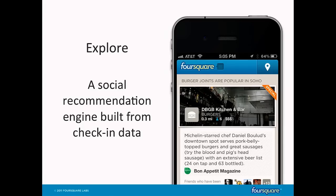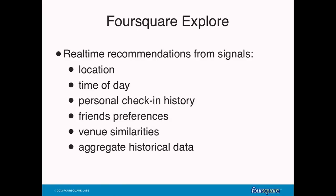This brings me to Explore — our tool for exploring a city. We think it's a powerful tool for making cities easier to use. Explore is a social recommendation engine built from all this aggregate check-in data. We want people to be able to pull out Explore anywhere in the world and get a great recommendation for whatever they're looking for — burgers, drinks, pizza — curated by their social network and highly personalized to their tastes. The signals that go into our recommendation engine include location, time of day, personal check-in history, preferences of yourself and your friends, similarities between venues, and aggregate historical data about which places are popular and when.